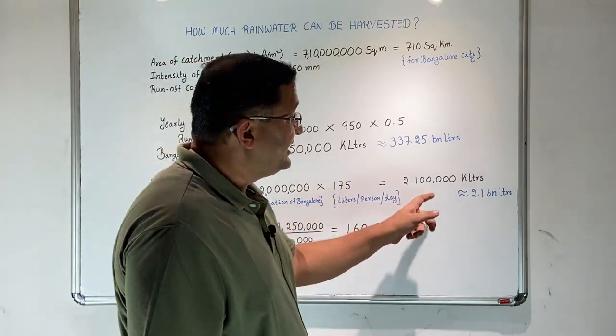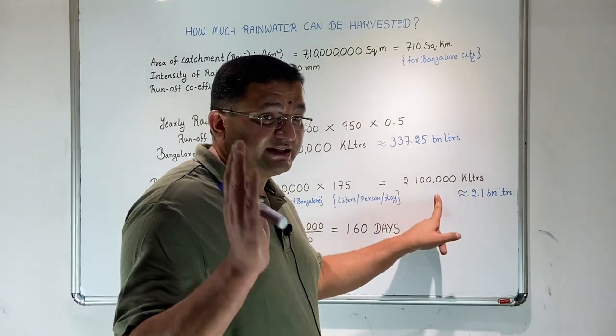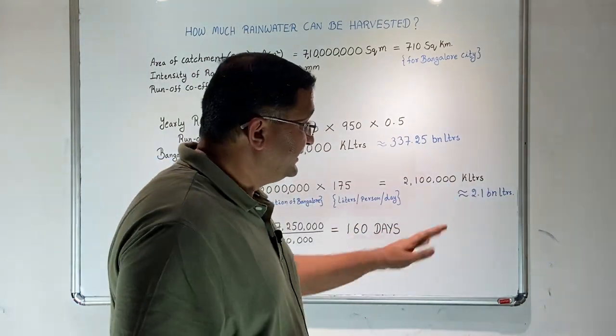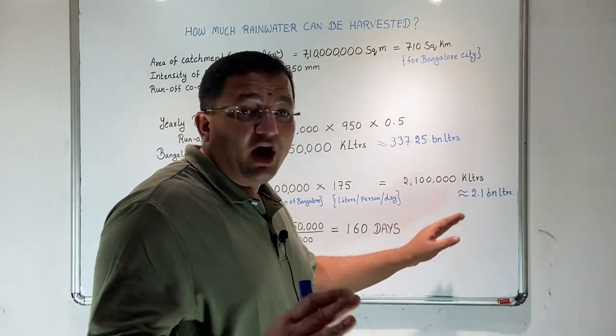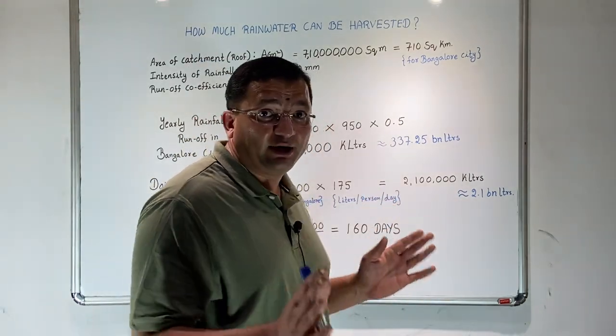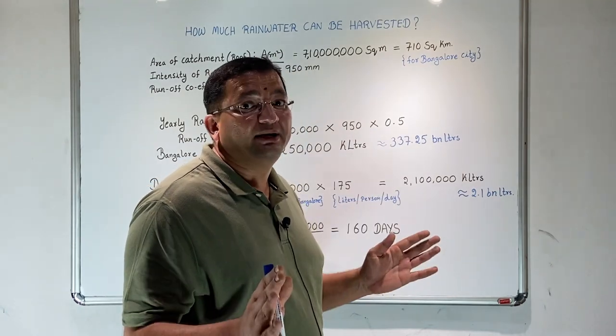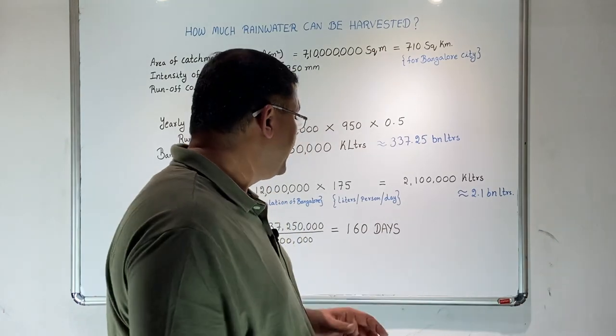When we do this calculation, the daily demand of water for Bangalore is 2.1 billion liters. This is definitely on the higher side. According to Bangalore city water board, the daily demand is anywhere between 1.5 to 1.6 billion liters every day.